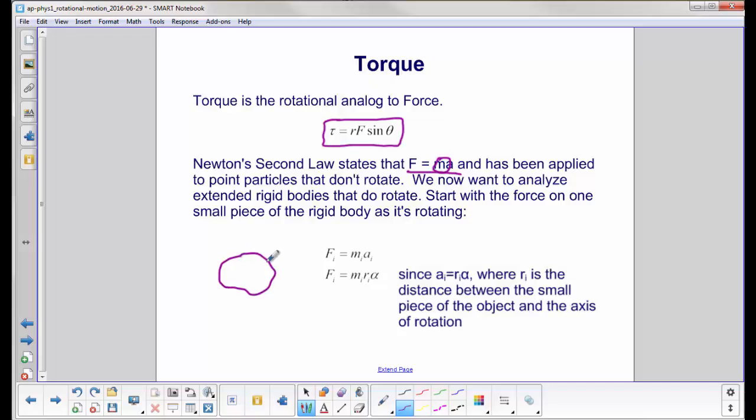If you have a shape like this, and it's rotating about a point here, we're going to take a little tiny piece of that surface, of that body, and we're going to call that M sub i.